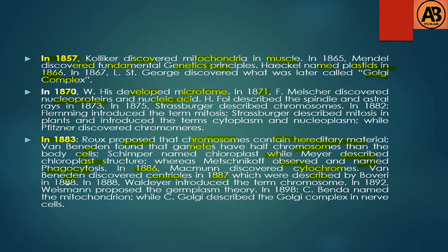Centrosomes were described by Boveri in 1888. Also in 1888, Waldeyer introduced the term chromosome. In 1892, Weismann proposed the germplasm theory. In 1898, Benda named the mitochondrion, and Golgi described the Golgi complex in nerve cells.